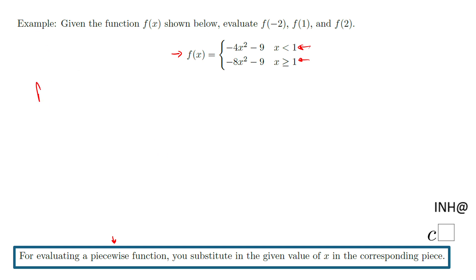Let's take a look to f of negative 2. That negative 2 is a number that is right here, less than 1. So that's the reason I'm going to pick that piece, negative 4x squared. Instead of x, I'm going to put negative 2.